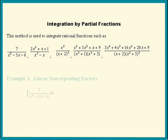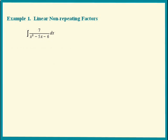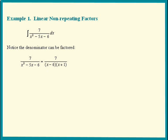The first example applies to linear, non-repeating factors. Find the integral of 7 over x squared minus 5x minus 6. The denominator can be factored into x minus 6 times x plus 1.